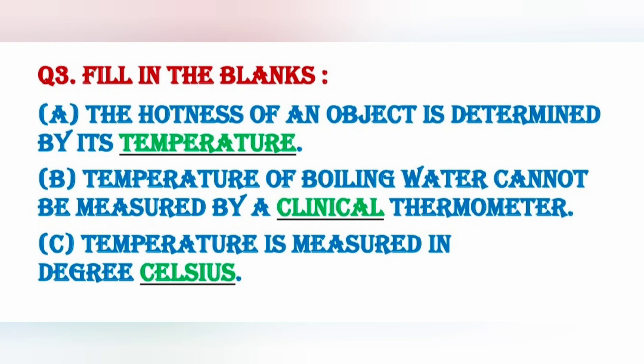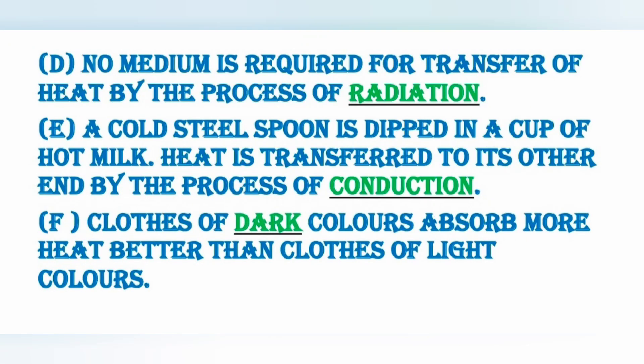C) Temperature is measured in degrees Celsius — तापमान को degree Celsius में मापा जाता है. D) No medium is required for transfer of heat by the process of radiation — radiation की process में heat transfer के लिए किसी माध्यम की आवश्यकता नहीं होती. E) A cold steel spoon dipped in hot milk transfers heat to its other end by the process of conduction, क्योंकि steel heat का conductor है. F) Clothes of dark colors absorb heat better than clothes of light color — dark color के कपड़े heat को absorb करते हैं और light color के कपड़े heat को reflect करते हैं.